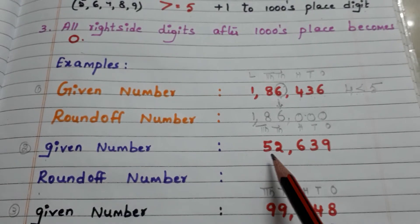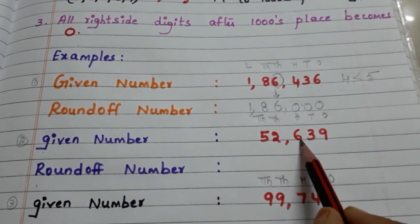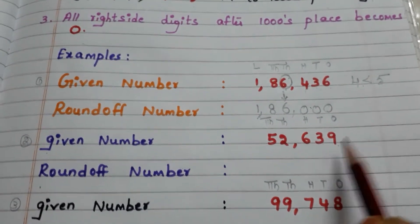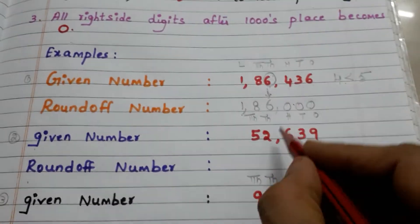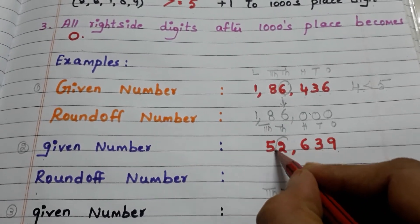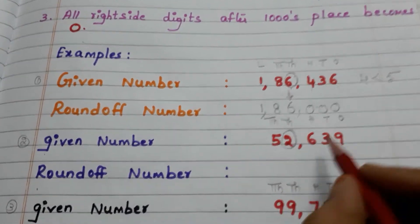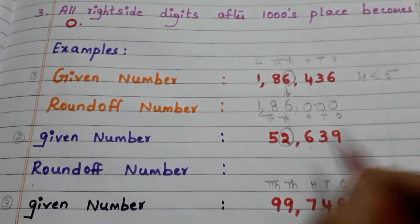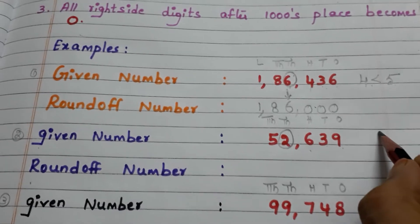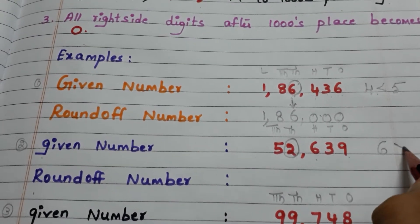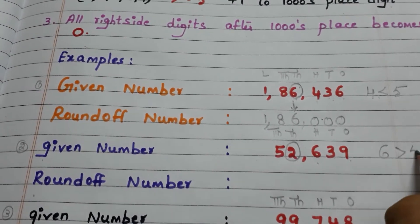Let us go to another example. Here we have the number 52,639. Circle the thousands place digit — here it is 2. Observe the hundreds place digit — here it is 6, and 6 is greater than 5.